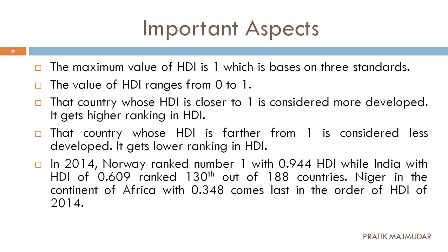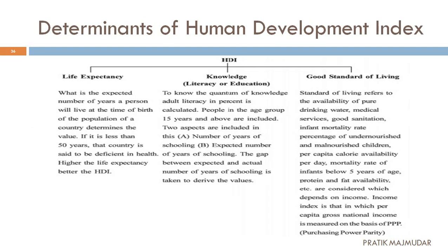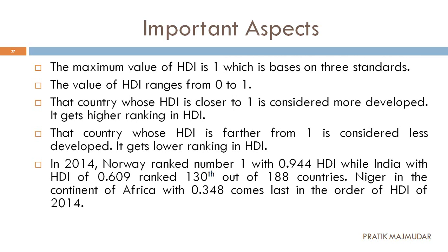There are some important aspects of HDI to remember. First, the maximum value of HDI is 1, based on the three determinants: life expectancy, knowledge, and good standard of living. If the derived value is close to 1, then the country's ranking is good. The HDI value ranges between 0 and 1. If HDI is closer to 1, the country is considered more developed, because it is fulfilling all three determinants.